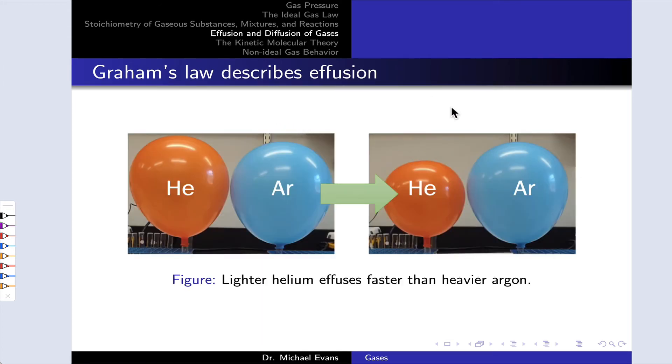As a simple experimental demonstration of effusion, imagine we started with two balloons containing helium and argon, and we poked a tiny hole in each of them, allowing the gases to effuse out. Helium is lighter than argon. It has a smaller molar mass than argon, and so the gas effuses faster out of the helium balloon than the argon balloon.